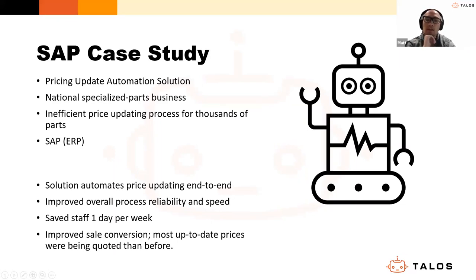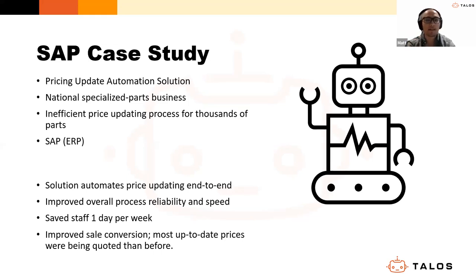That automation saved AP staff roughly two days per week. What made the implementation so successful was the real effort put into understanding the AP process clearly beforehand. By mapping out that process for the first time, we were able to uncover existing inefficiencies and come up with improved designs that we could quickly resolve and implement — then roll that out as a proven solution across all their sites. That was really the backbone of that particular case study.